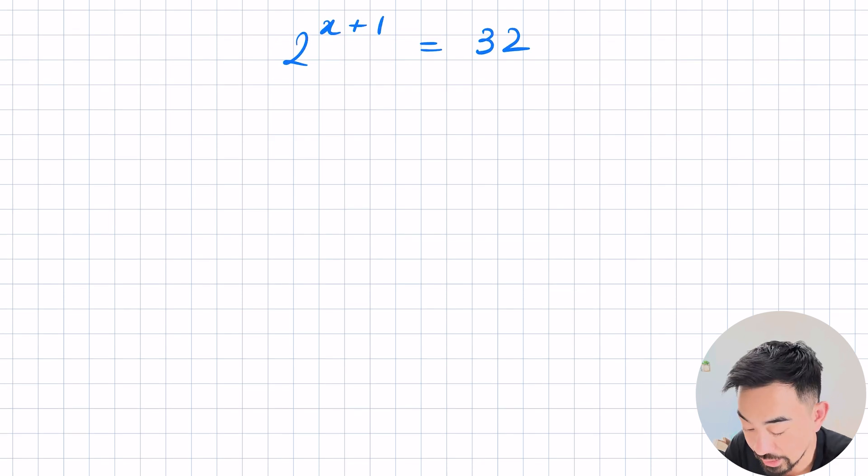Okay but sometimes they get a little bit harder like this. 2 to the power of x plus 1 equals 32. So what you want to do here is you want to convert this 32 or make these two have the same base. In other words I'm trying to get the 32 to have a base of 2. Now 2 to the power of what is 32? So 2, 4, 8, 16, 32. 2 to the power of 5. And when these bases are the same you can just equate these indices by writing x plus 1 equals 5. So x is equal to 4.